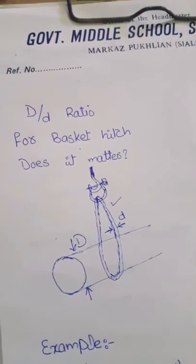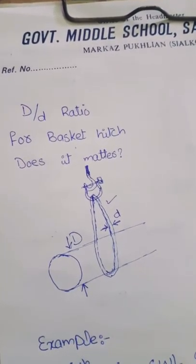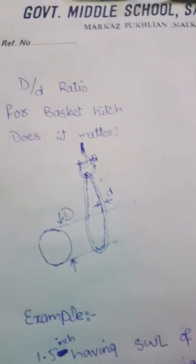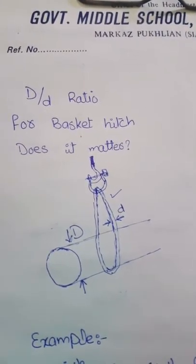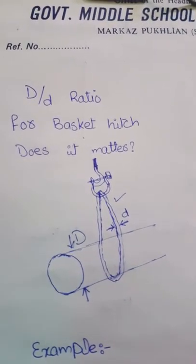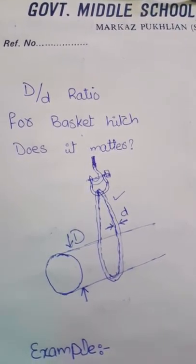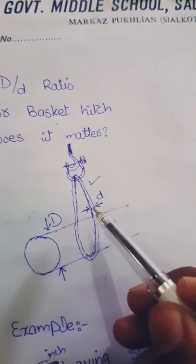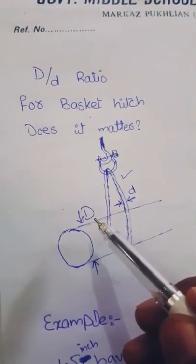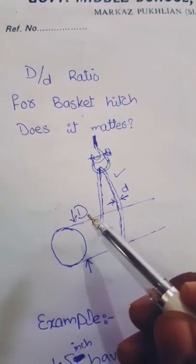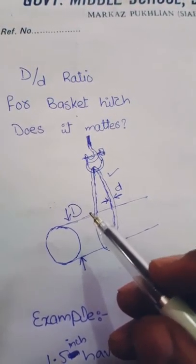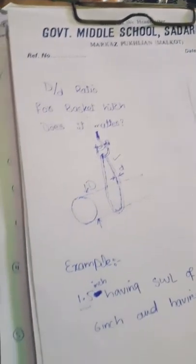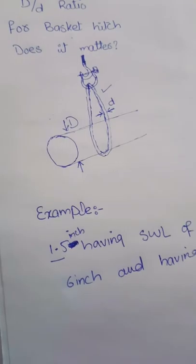We will discuss D/d ratio for basket hitch. Does it matter for lifting? The D/d ratio is for a basket hitch. The small d letter is for the diameter of this rope sling, and capital D is the diameter of a pipe. We will discuss it with an example.